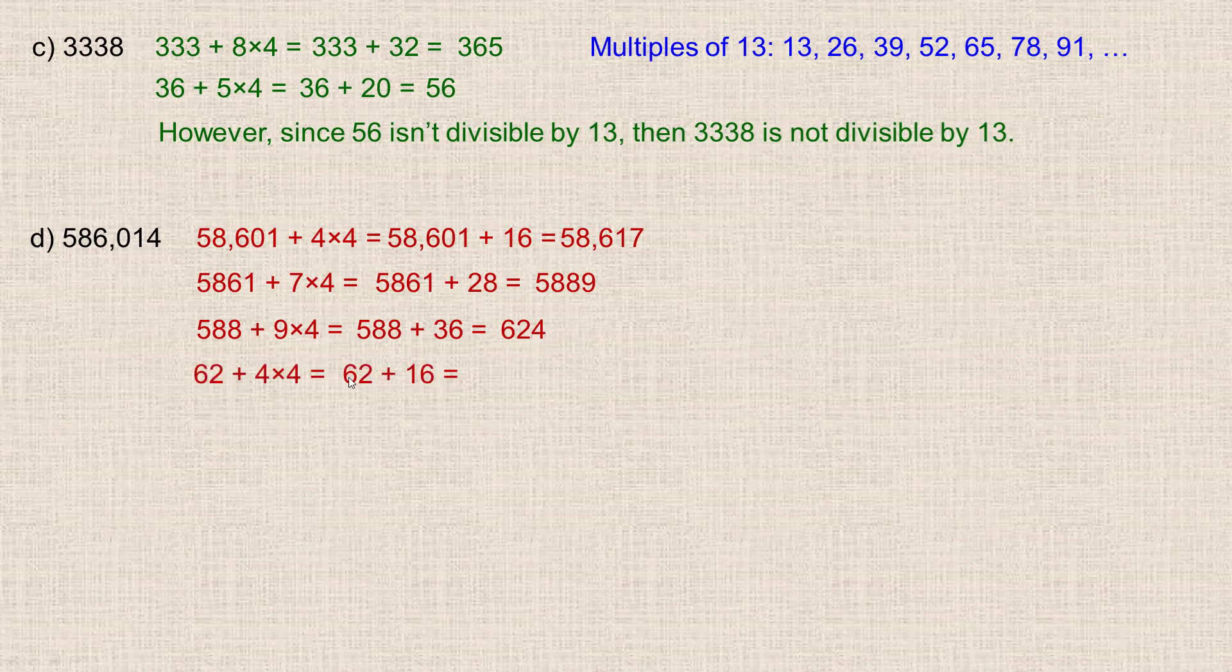So next we would go 62 plus 4 times the 4 in the end. So we're adding 16 to 62, which is 78. And if you look at the multiples up here, see that's the sixth multiple of 13. So since 78 is divisible by 13, then 586,014 is also divisible by 13, which is what we're trying to find.